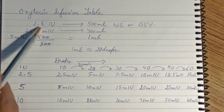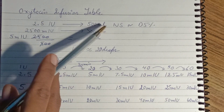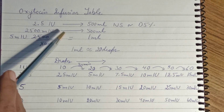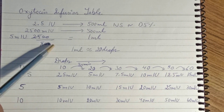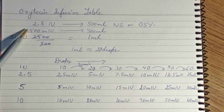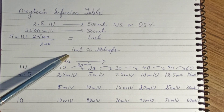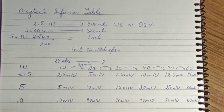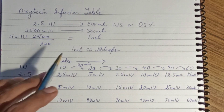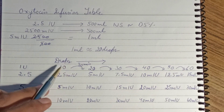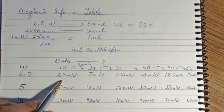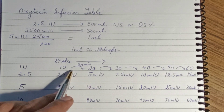This is the oxytocin infusion table. The starting dose is 2.5 international units put into a 500 ml NS or D5, which means there are 2,500 milli-international units in 500 ml — so per ml it contains 5 milli-international units. Since 1 ml equals approximately 20 drops, you start with 10 drops per minute, which delivers around 2.5 milli-international units per minute.